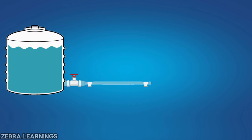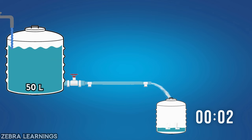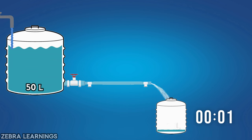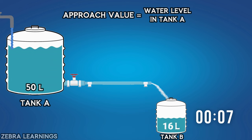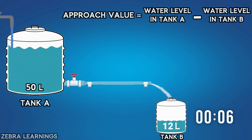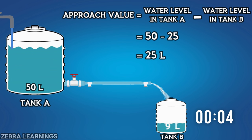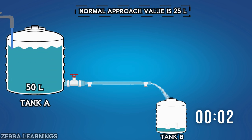Let's see an example to understand the chiller approach concept easily. Let's take a tank with 50 liters of water. When the water level decreases, water is added from an external tap to maintain 50 liters. Every 10 seconds, water is filled from this tank into a 25-liter tank. The approach value equals water level in tank A minus water level in tank B: 50 minus 25 equals 25 liters. This is the normal approach value of this system, meaning the system is working correctly.